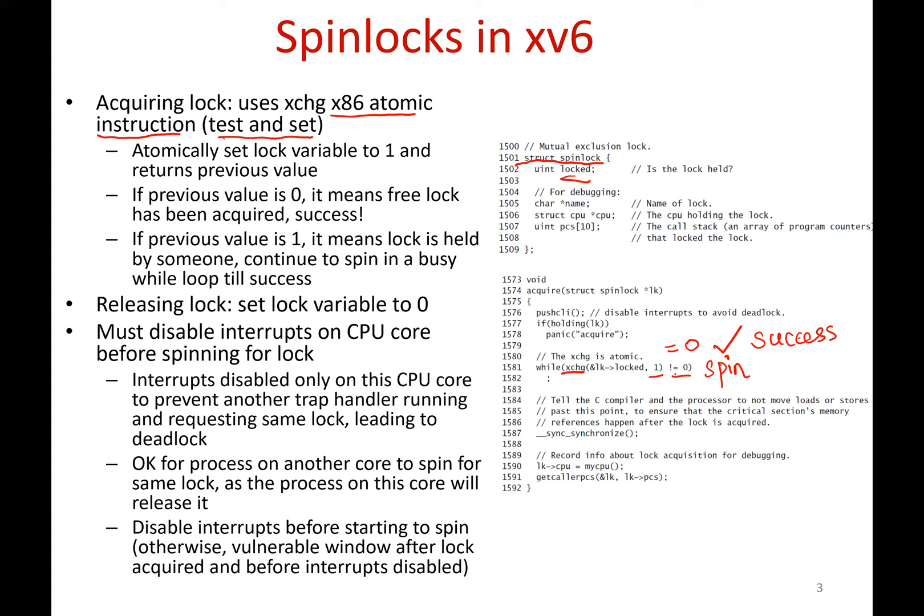This is similar to the code we have seen earlier for acquiring locks using atomic hardware instructions. The code for releasing the lock is simple — it is basically setting the `locked` variable to 0. There is also a synchronization step to tell the C compiler and the processor not to reorder loads and stores, related to hardware optimization.